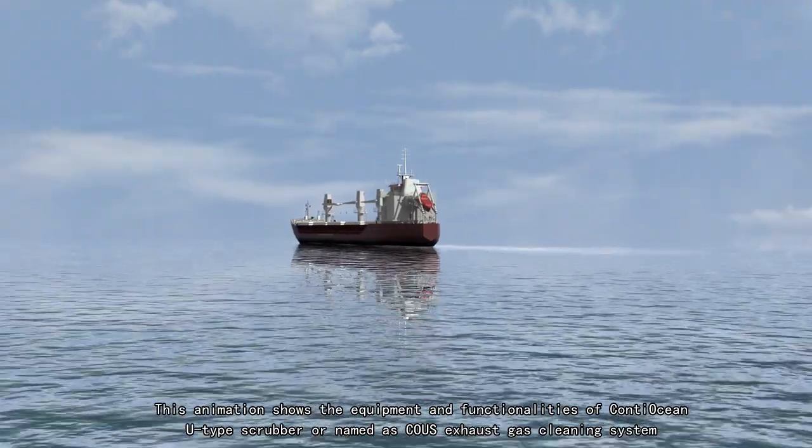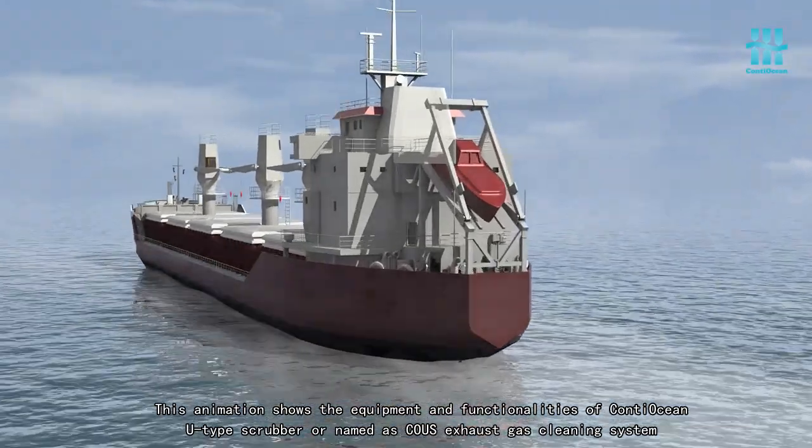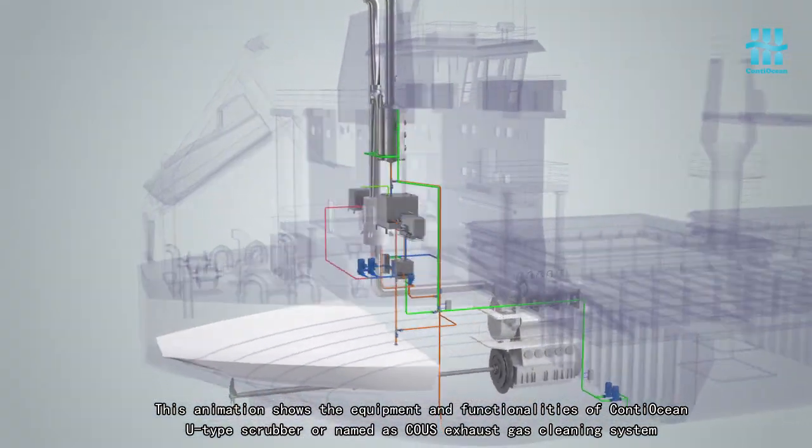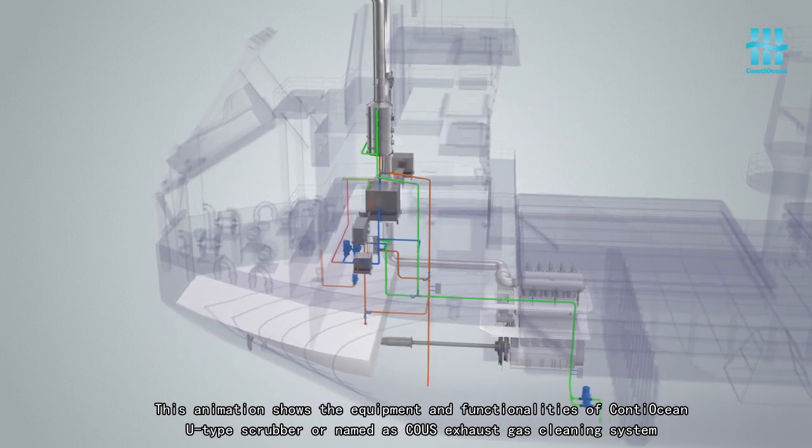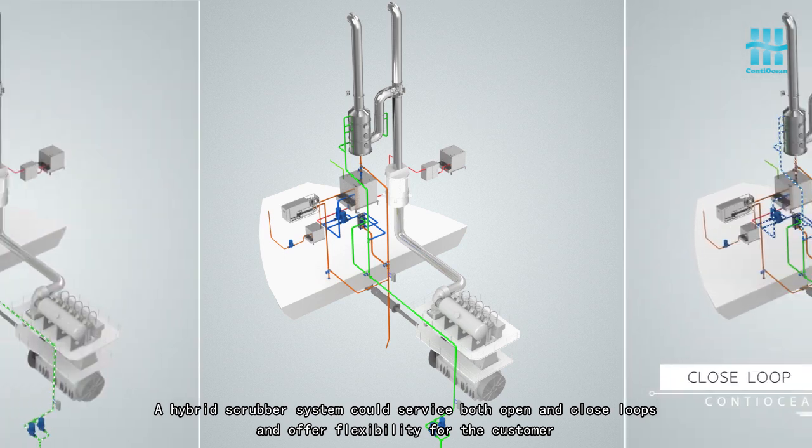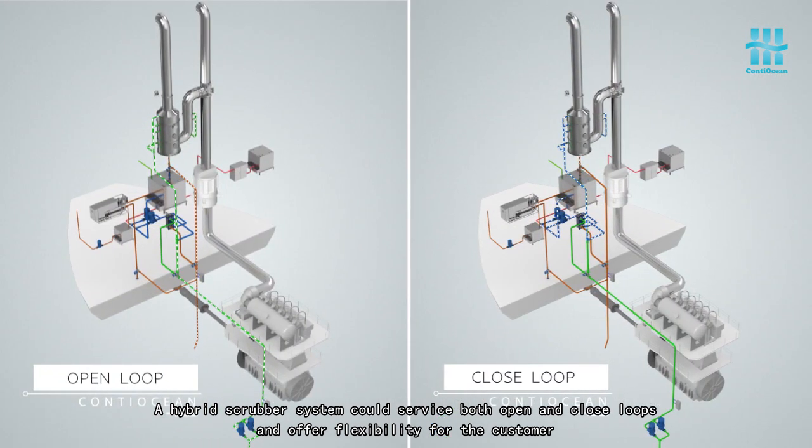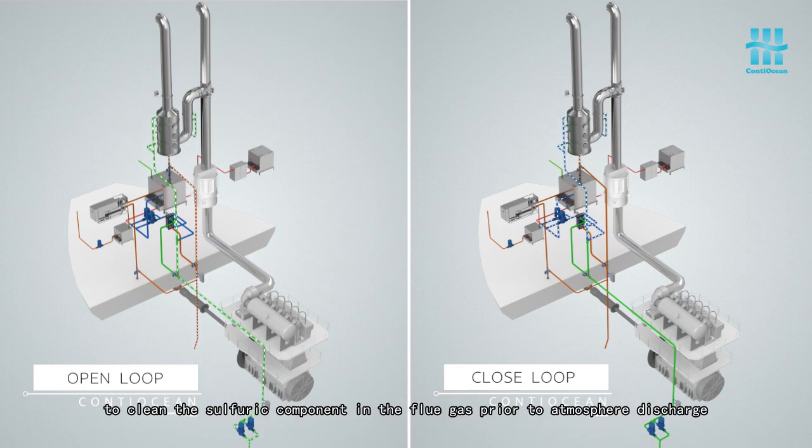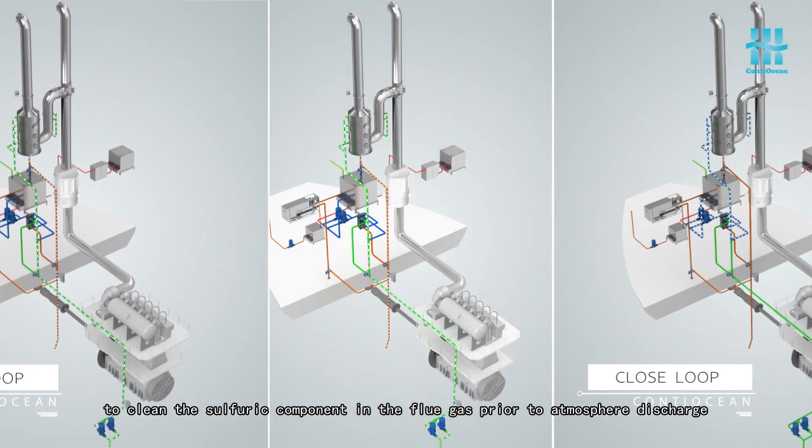This animation shows the equipment and functionalities of ContiOcean U-Tab Scrubber, or named as Koyu's exhaust gas cleaning system. A hybrid scrubber system could service both open and closed loops and offer flexibility for the customer. The scrubber system selects seawater as the cleaning media for open loop and alkaline solution for closed loop to clean the sulfuric component in the flue gas prior to atmosphere discharge.